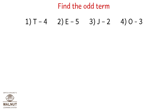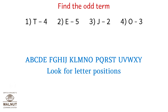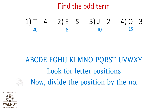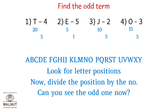Find the odd term. The series is given below. Look for letter positions: T is 20, E is 5, J is 10, O is 15. Now divide the position by the number: 20 divided by 4 is 5, 5 divided by 5 is 1, 10 divided by 2 is 5, 15 divided by 3 is 5. So we have an odd term, which is option 2.